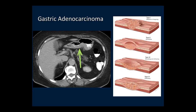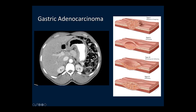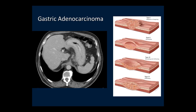The ulcerating and infiltrating form has an infiltrating component that thickens the gastric wall, with ulceration along the luminal surface. The infiltrating form focally or diffusely infiltrates the gastric wall, thickening it and replacing the normal rugal fold pattern. These can have normal gastric distension or may narrow the stomach due to fibrotic reaction as the tumor infiltrates, producing linitis plastica. This is a nice example of linitis plastica with narrowing of the gastric lumen, thickening of the gastric wall, and loss of the normal rugal fold pattern. Small perigastric nodes in the perigastric fat accompany this tumor.